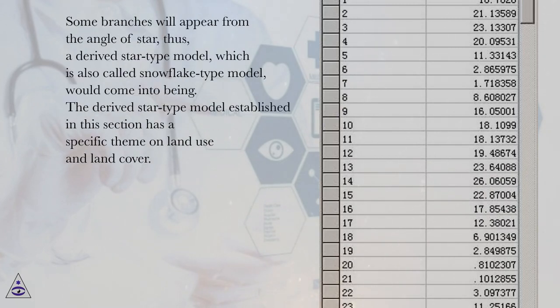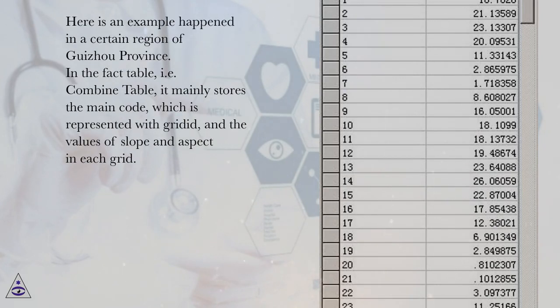Some branches will appear from the angle of star, thus, a derived star type model, which is also called snowflake type model, would come into being. The derived star type model established in this section has a specific theme on land use and land cover. Here is an example happened in a certain region of Guizhou province.